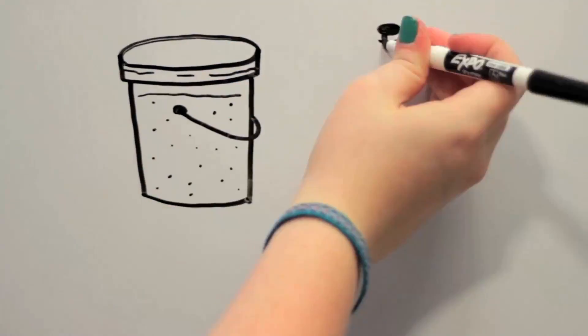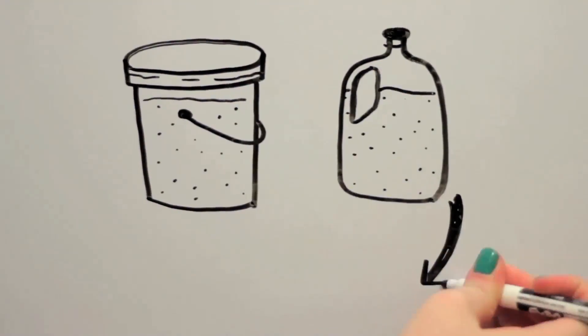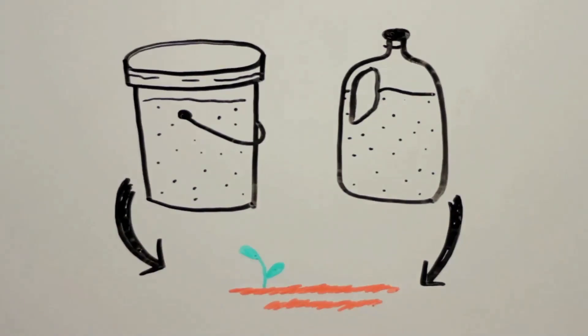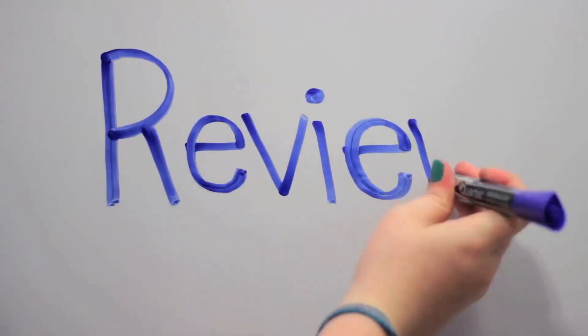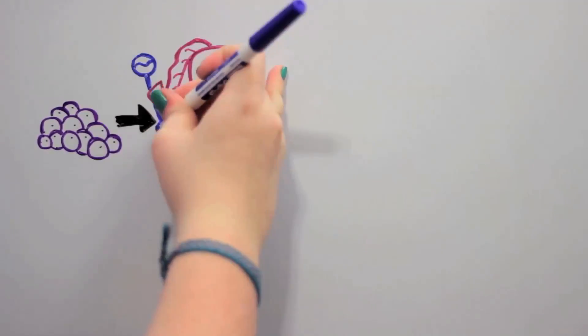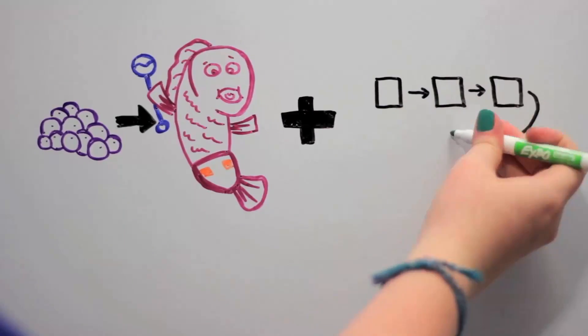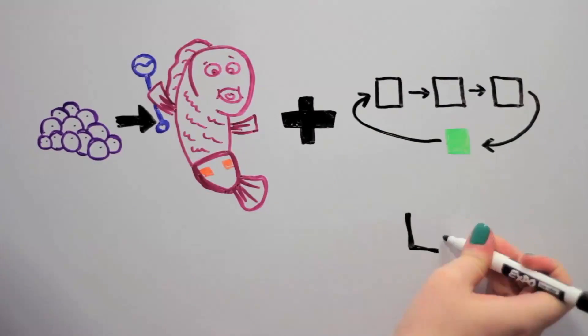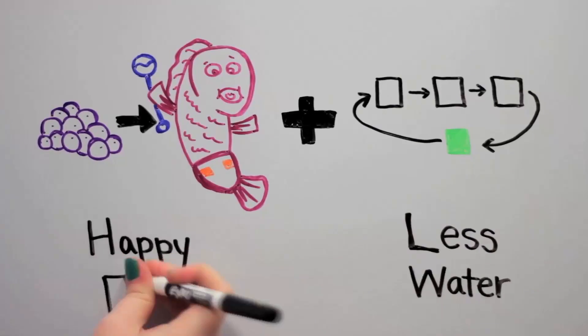Plus, when we finally do change out our water, it then makes excellent fertilizer for plants and gardens in our area. So let's review. Our fish nursery lets us raise young, healthy baby tilapia without any yucky chemicals, all while using water that's naturally cleaned by bacteria. So we use less water and grow more happy fish.